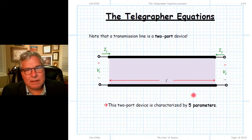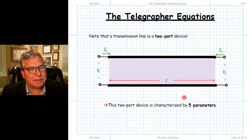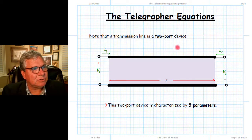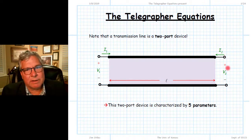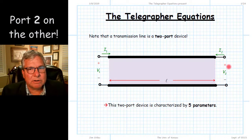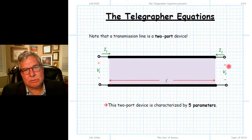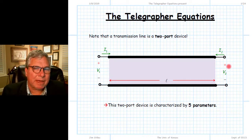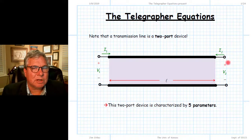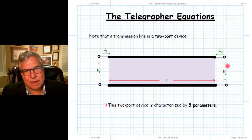The key thing to bear in mind about a length of transmission line is that it is a two-port device. You have port one on one side and port two on the other. What we're going to do here is demonstrate and create the mathematical description of what goes on in a transmission line.